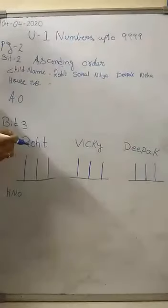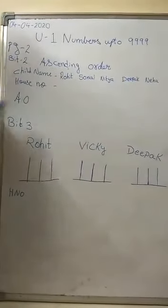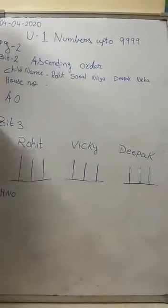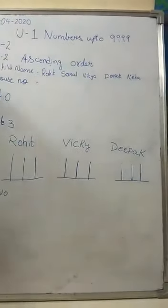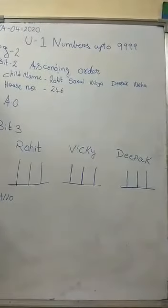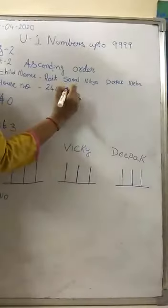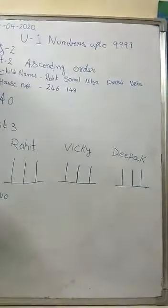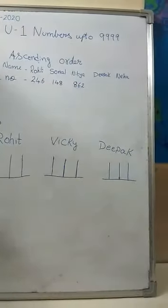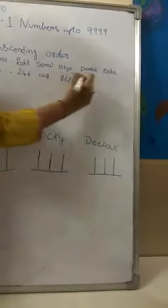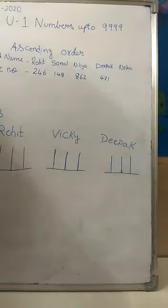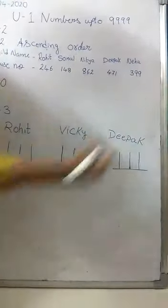While I am doing this here, on page number 2 you have, starting with bit number 2, the children whose house numbers are given there — you need to write them as specified. First, the child Rohit has house number 246. House number of Sonal is 148. House number of Nithya is 862. House number of Deepak is 471. And last, the house number of Neha is 399.